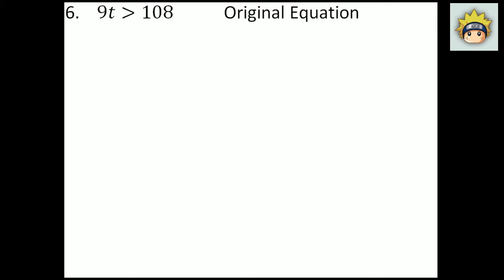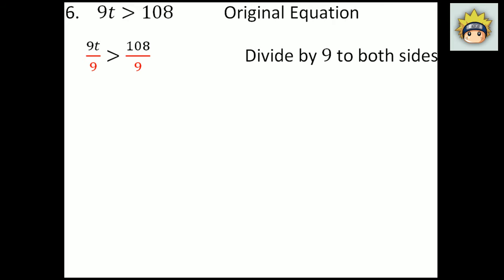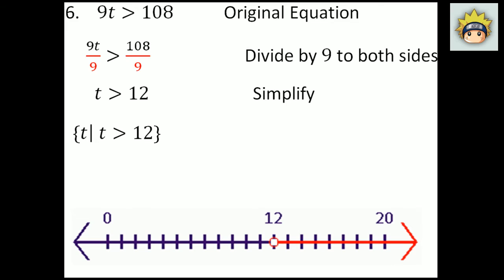Number 6. The original equation is 9t is greater than 108. We have to get t alone, so we use the inverse property — divide by 9. Divide 9 from both sides. This is a positive value, so we do not flip the inequality symbol. What I have left on the left-hand side is t, which is greater than 108 divided by 9, which simplifies to 12. So t is greater than 12. In set builder notation: t is greater than 12. It is an open circle on 12 going all the way to the right — so 13, 14, 15, 16, 17, 18, 19, 20 and so forth would make this valid.